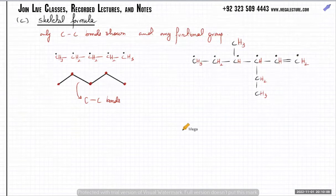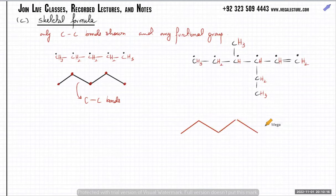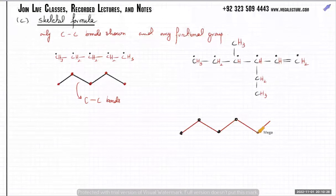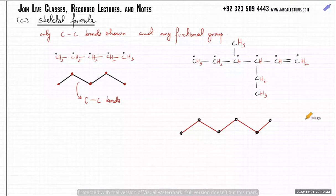To draw the skeletal formula for this one, I'll go with the straight line first: one, two, three, four, five, six carbon atoms in a line. Let me count again — first carbon atom, second, third, fourth, fifth, and sixth. That's your six carbon atoms. There's a double bond right at the end, so the last one will be a double bond.